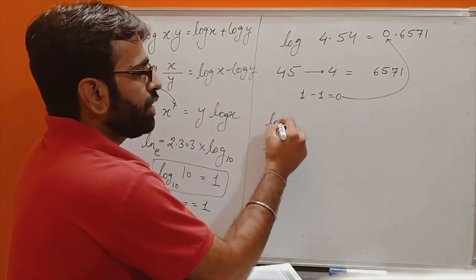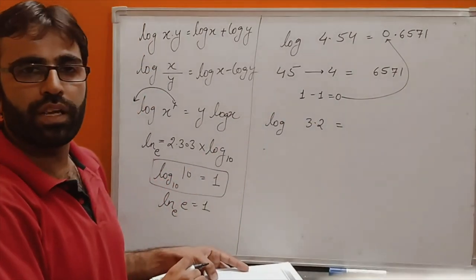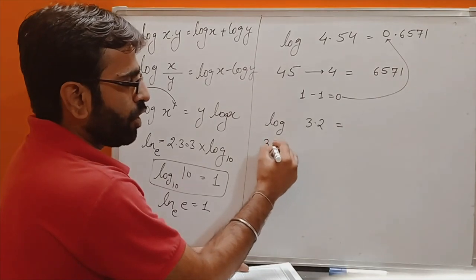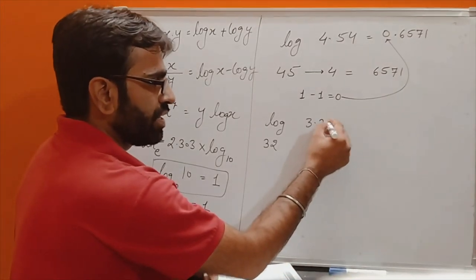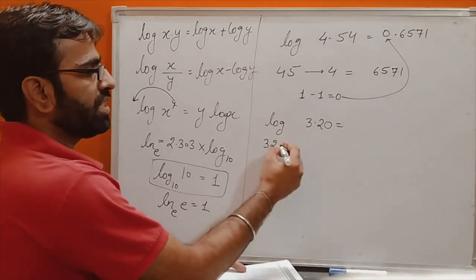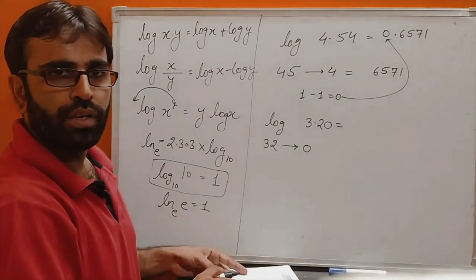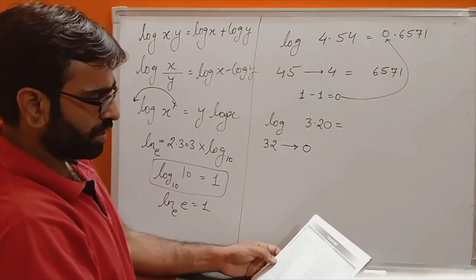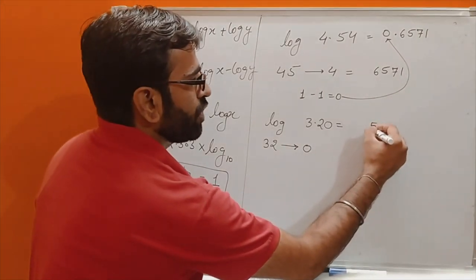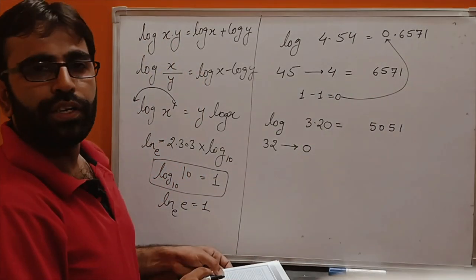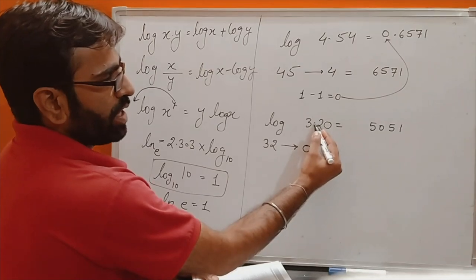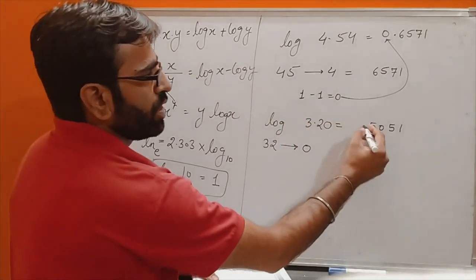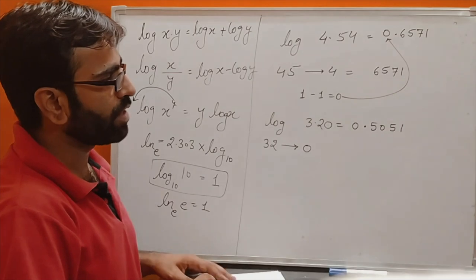Suppose we have log 3.2 — only 2 digits. We look at 32 with the 3rd digit considered as 0. We see the log value of 32 in column 0, which gives 5051. Again 1 digit in the characteristic, so 1 − 1 = 0, giving 0.5051.